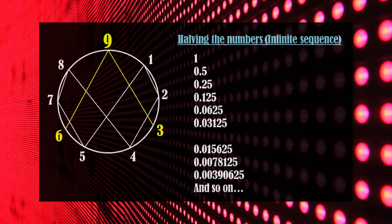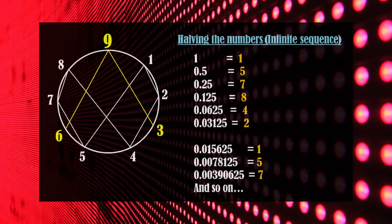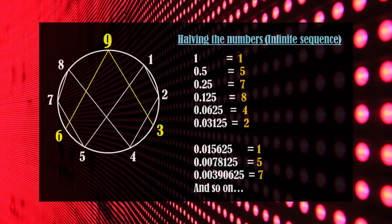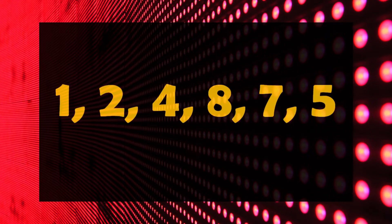Now, instead of doubling the numbers, let's halve the numbers repeatedly, starting with number 1. Add all the digits of the number and get the digital root. You will be surprised to see that this time too, we get the same numbers repeatedly that we got in case of doubling the numbers. So in both the cases of doubling and halving the numbers, we are getting the same numbers: 1, 2, 4, 8, 7 and 5.